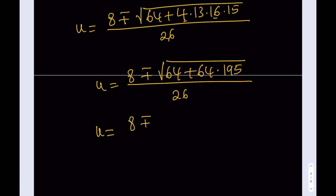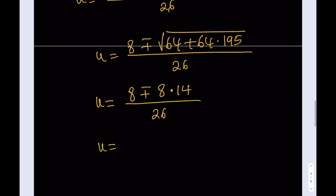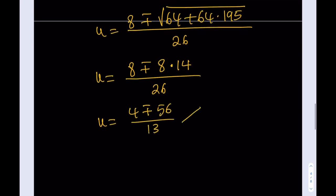Now splitting up the two cases: u equals 4 plus 56 over 13, which is 60 over 13, or u equals 4 minus 56, which is negative 52, divided by 13, giving negative 4. We're getting an integer — beautiful. Remember that u equals xyz.